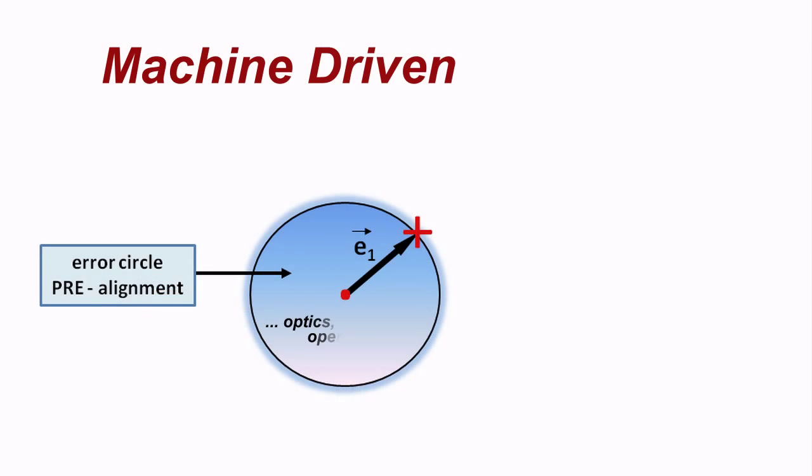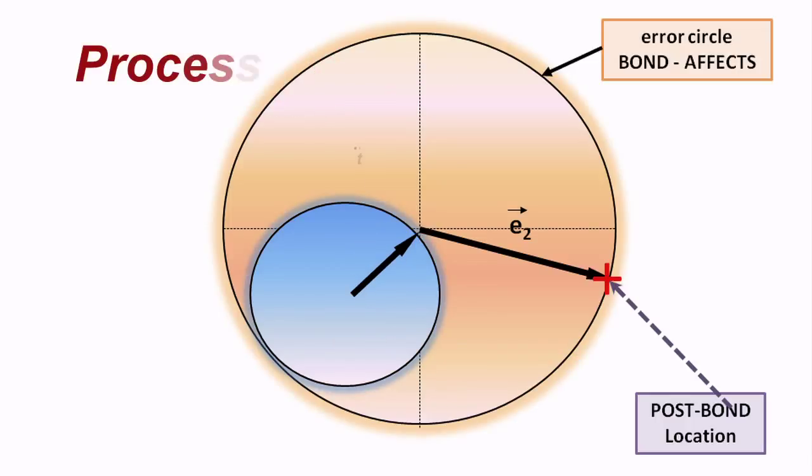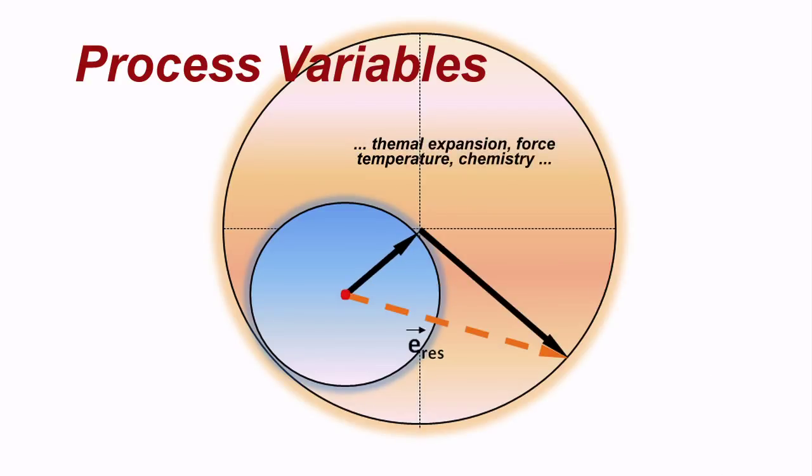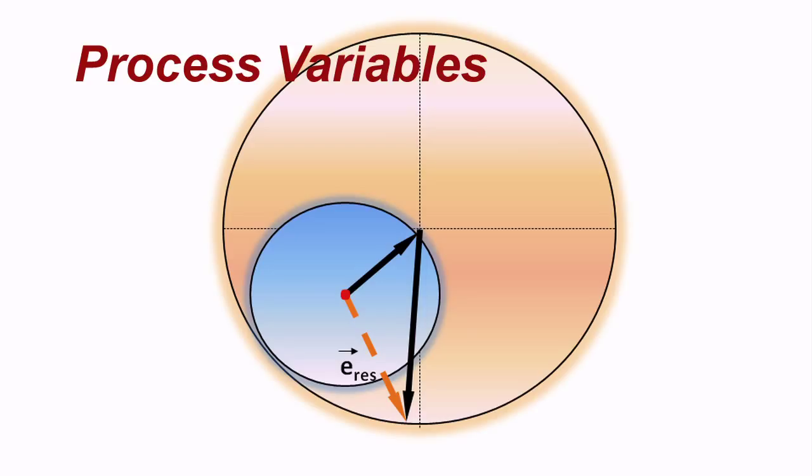Final bonded accuracy is more complex. It is the vector addition of machine-related pre-bond errors, plus those induced during the bonding process. This latter contribution includes thermal expansion effects and bond line contributions, as illustrated by the larger vector radius.